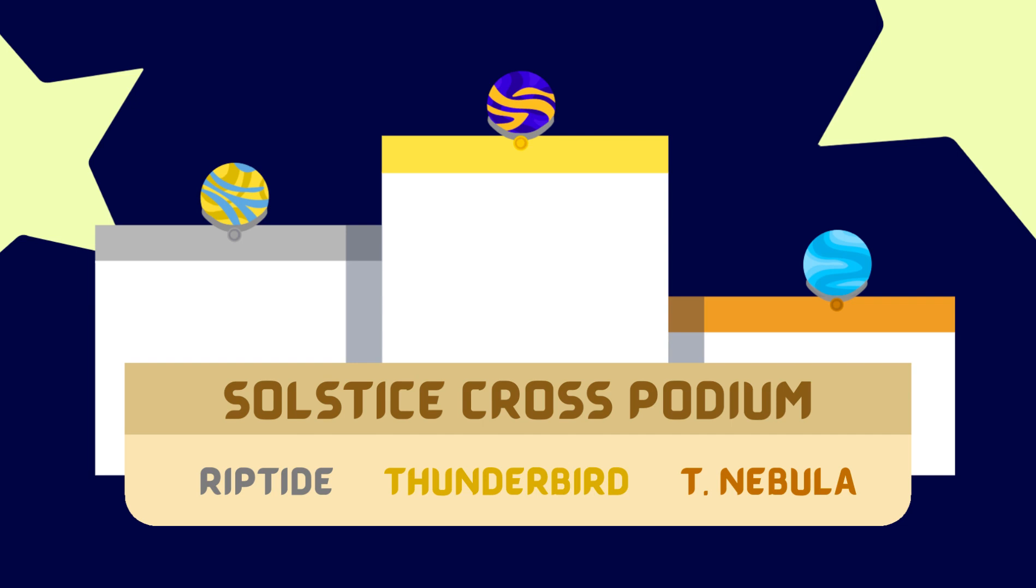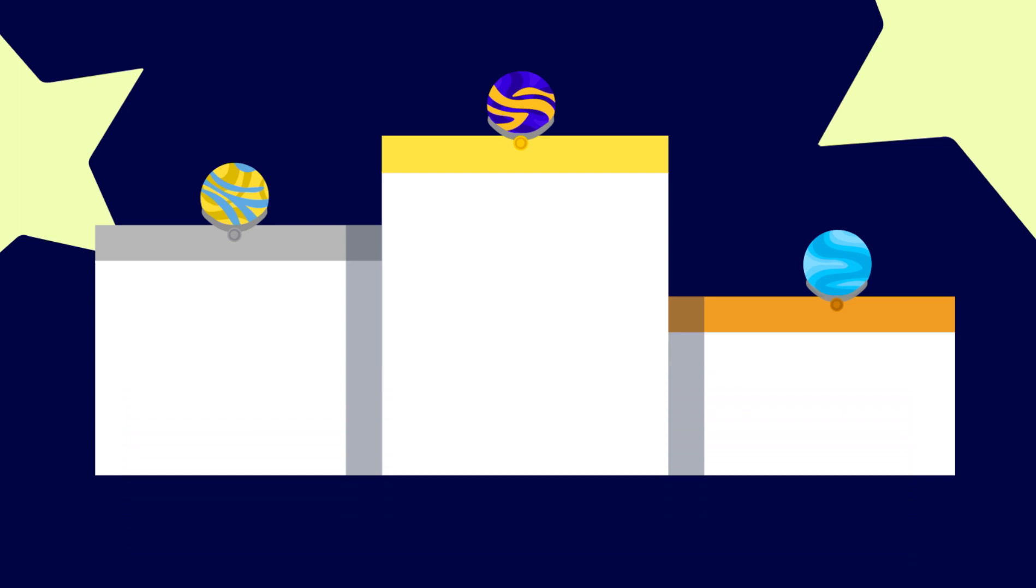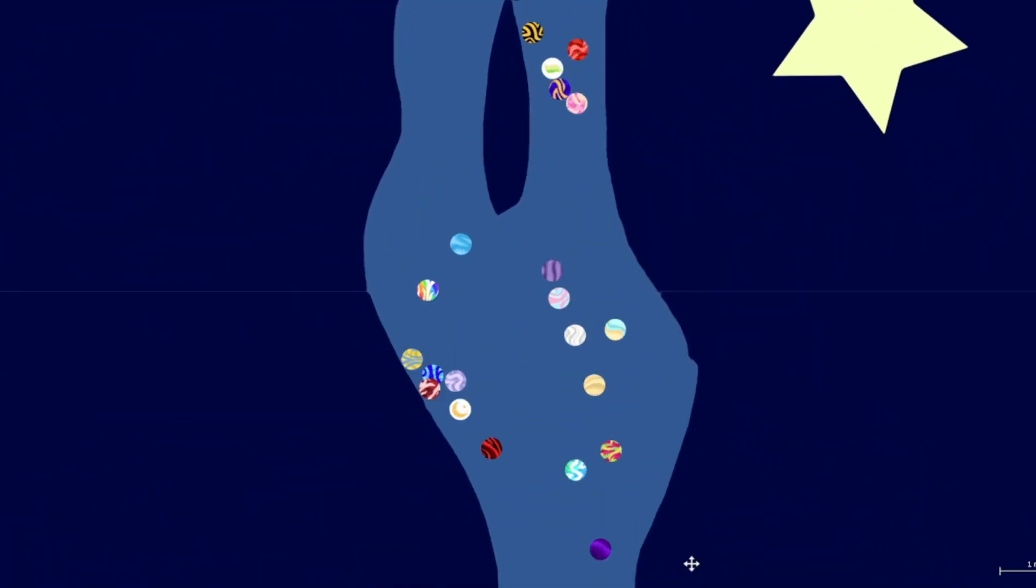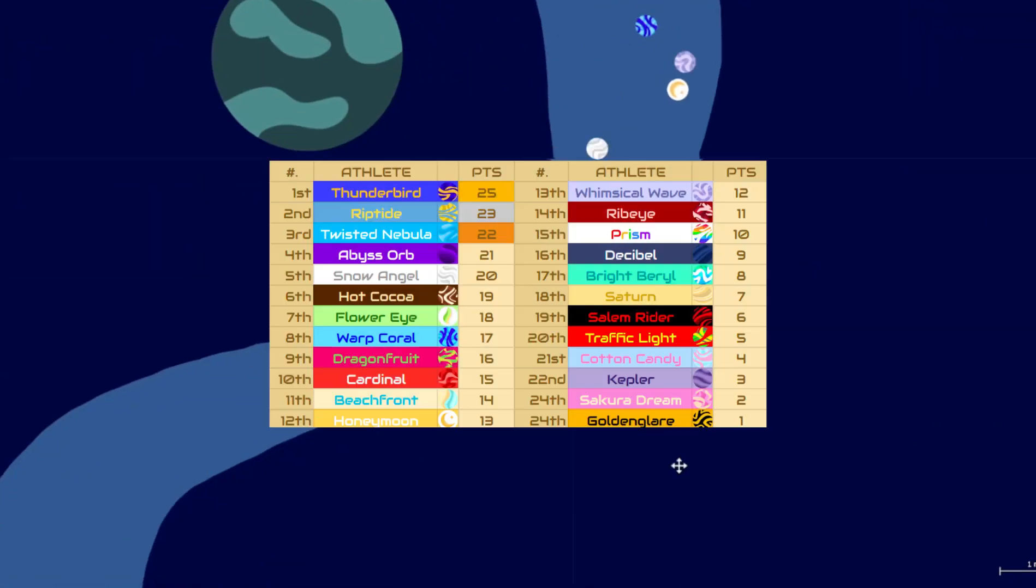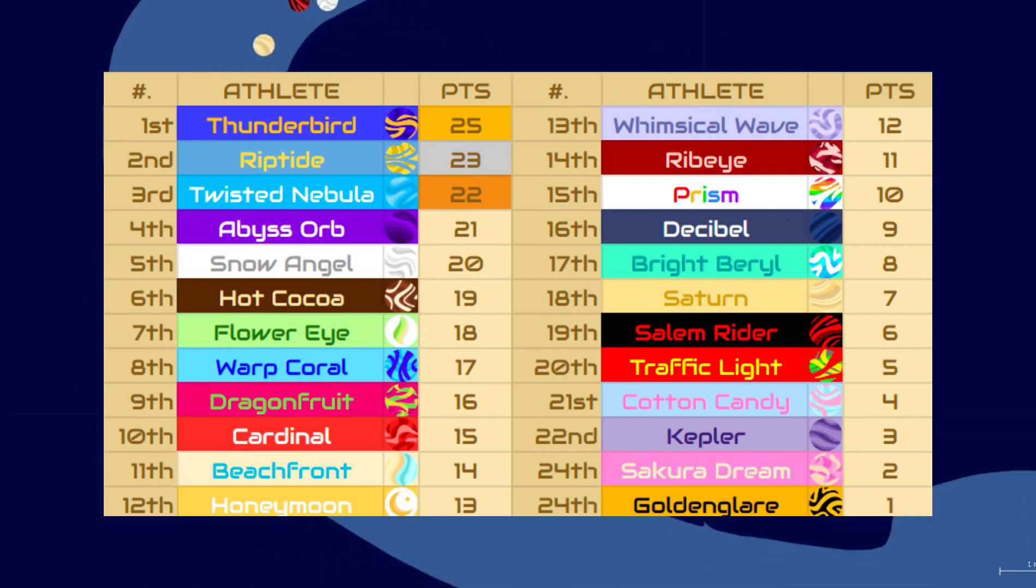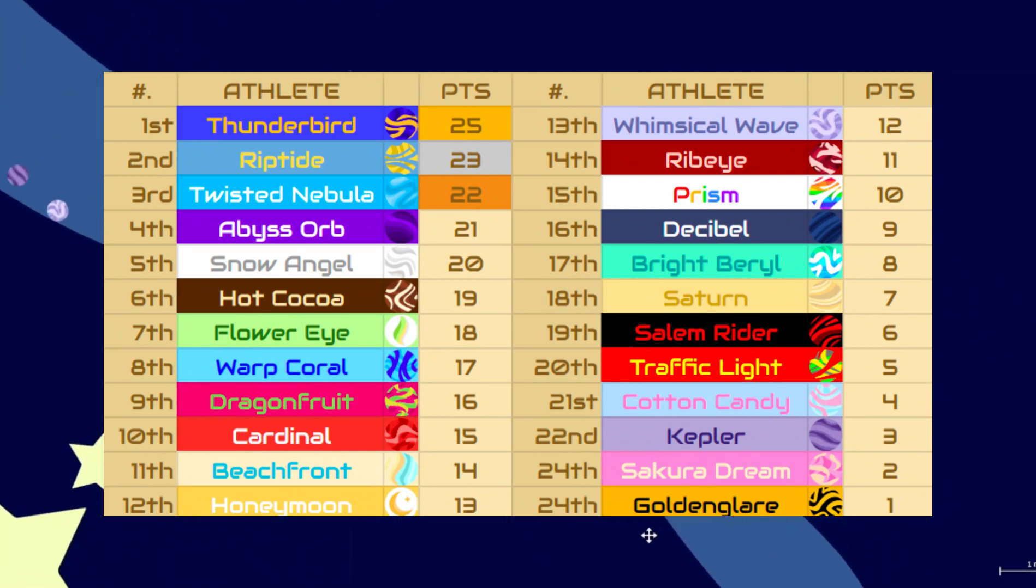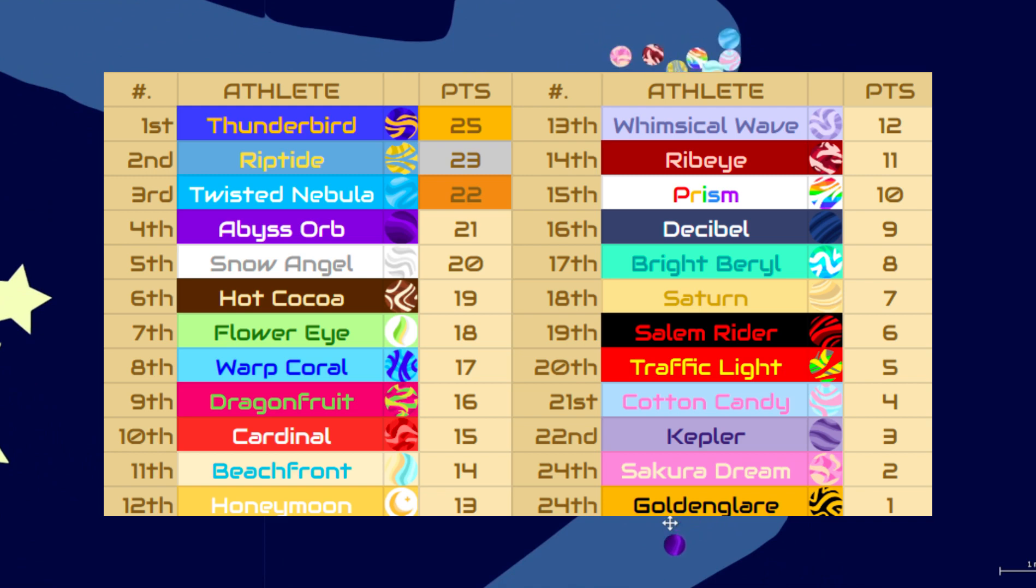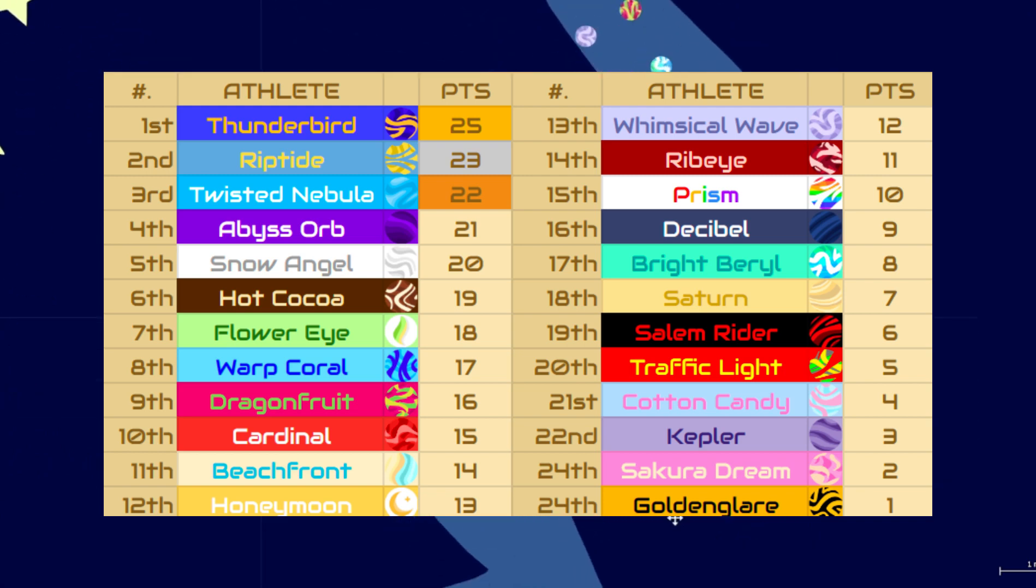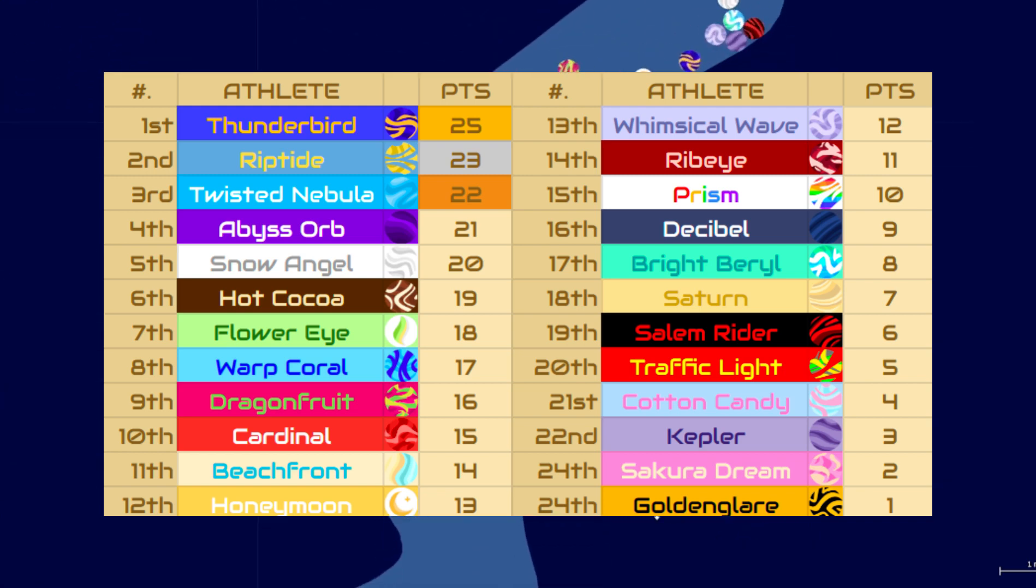Upcoming are the rally standings: Thunderbird, Riptide, Nebula, Abyss Orb, Snow Angel, Hot Cocoa, Flower Eye, Warp Coral, Cardinal, Beachfront, and Honeymoon will get our final top half finishes for the qualifiers. But now, with all three races finished, it is now time to announce our 12 qualified marbles.